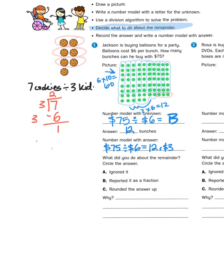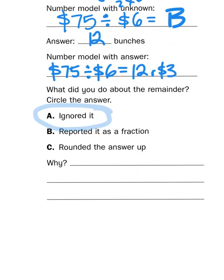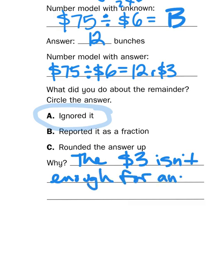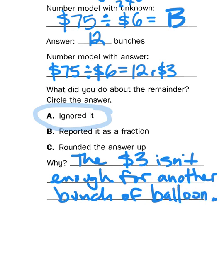Well, in this case, if I'm buying something and if I don't have enough money to make a purchase, I'm out of luck. So what I need to do here is I need to ignore the fact that I have 3 extra dollars and just stick it back in my pocket. I'm not going to report it as a fraction of a bunch of balloons because I can't buy part of a bunch. And I can't round my answer up because I don't have enough money to make the purchase. So why do I ignore the 3 dollar remainder? We can say something like the 3 dollars isn't enough for another bunch of balloons. And that is what we mean by deciding or interpreting the remainders.